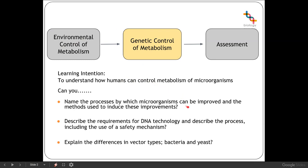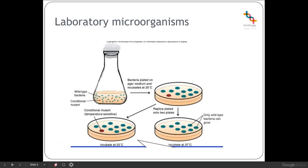What you need to be able to do is name the processes by which microorganisms can be improved and the methods used to induce these improvements. You need to describe the requirements for DNA technology and describe this process including the use of a safety mechanism, and explain the differences in the vector types — bacteria and yeast.